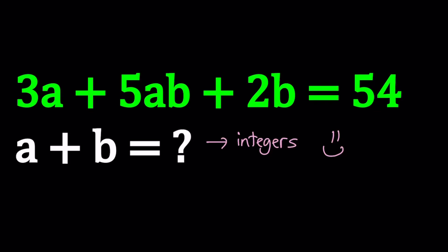Hello everyone. In this video, we're going to be solving a nice Diophantine equation. We have 3a + 5ab + 2b = 54, and a and b are integers. We are supposed to find the value of a + b, but once you find a and b values, adding them up would be fairly easy, don't you think? So let's go ahead and see how we can solve this problem in two different ways.